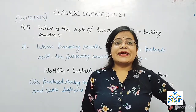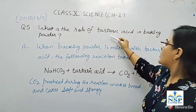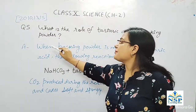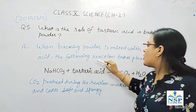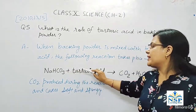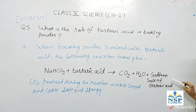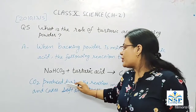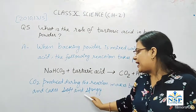Our next important question, question number 5, is: What is the role of tartaric acid in baking powder? When baking powder is mixed with tartaric acid, the following reaction takes place. Sodium bicarbonate when reacted with tartaric acid gives carbon dioxide, butter, and sodium salt of tartaric acid. CO2 produced during this reaction makes bread and cake soft and spongy.